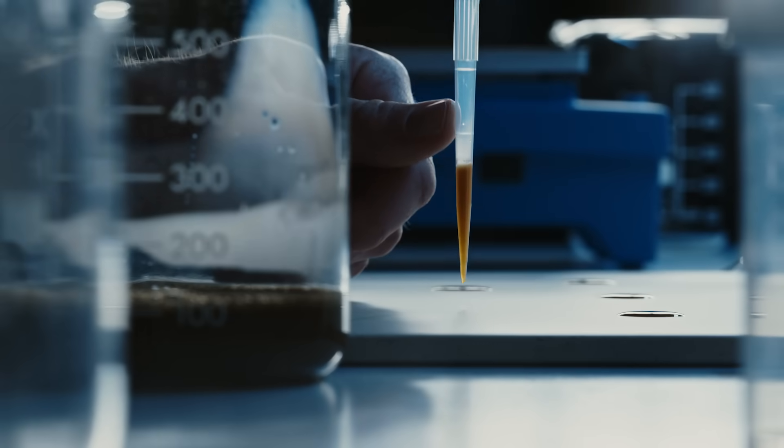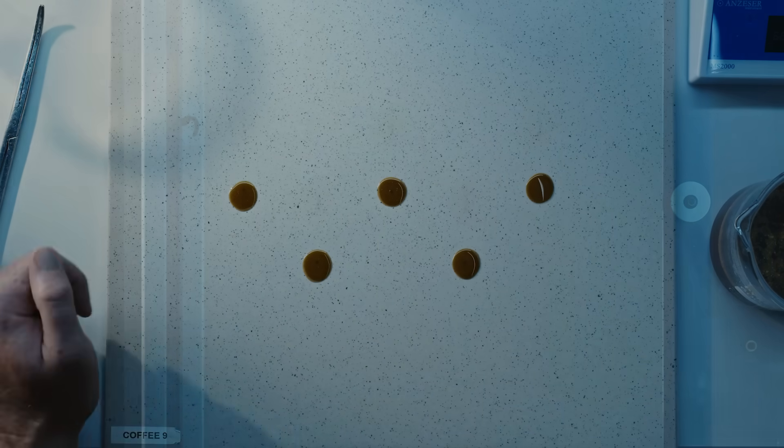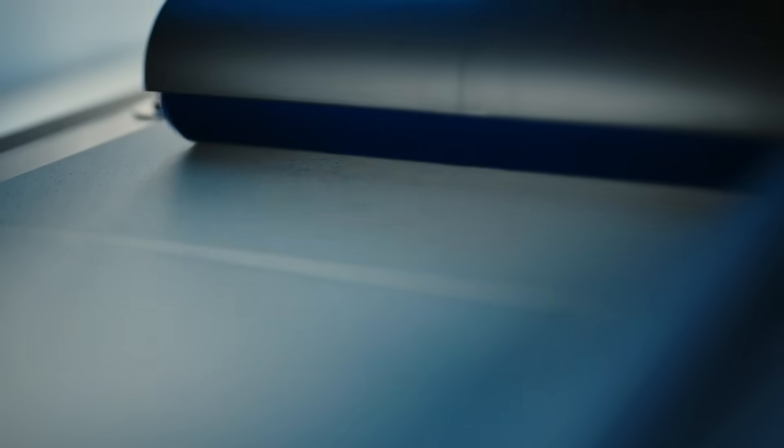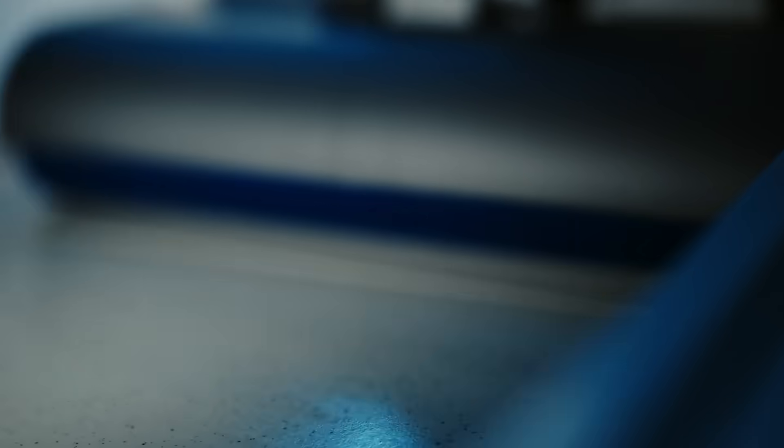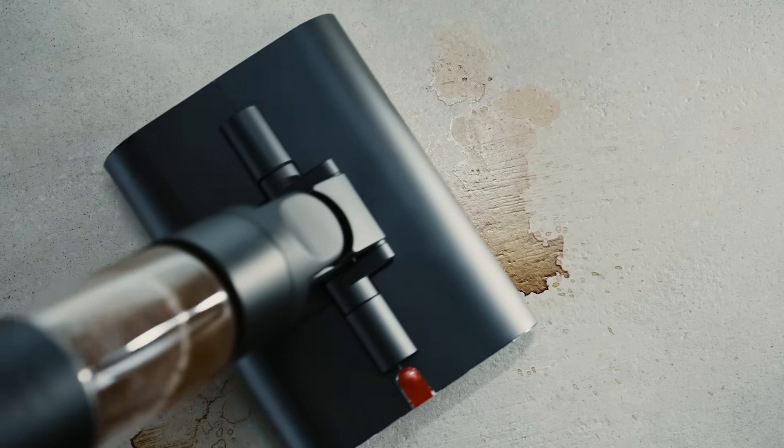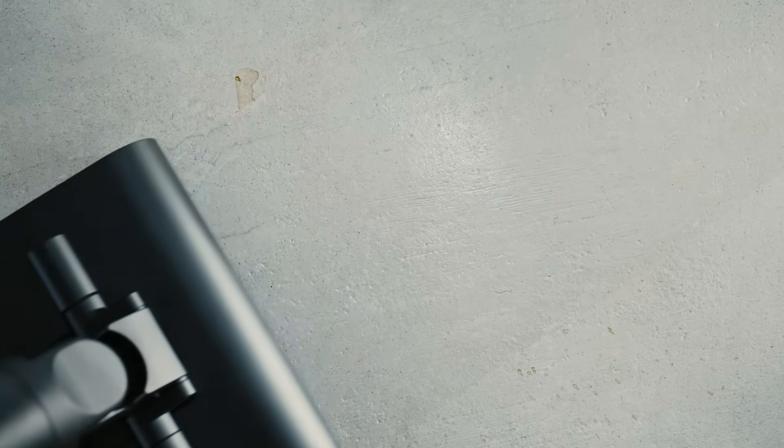The Dyson Wash G1 also has three user selectable hydration modes. It enables you to select a hydration level that is ideally suited to the type of flooring in your home. There's also a max mode which maximizes the flow of water to the rollers to remove stubborn stains from the floor.